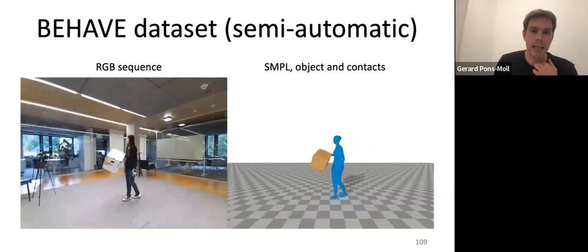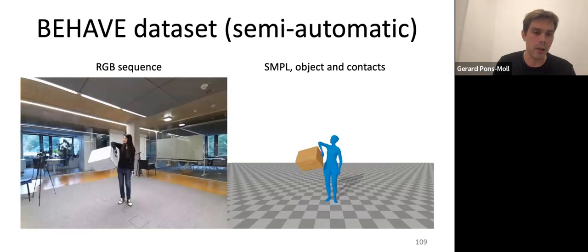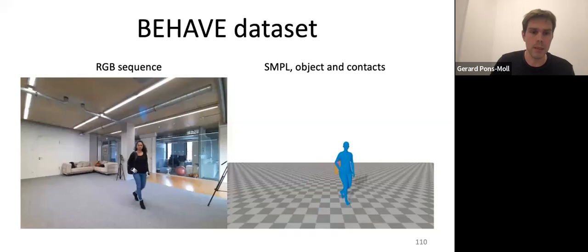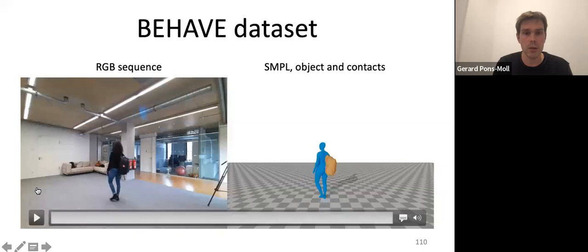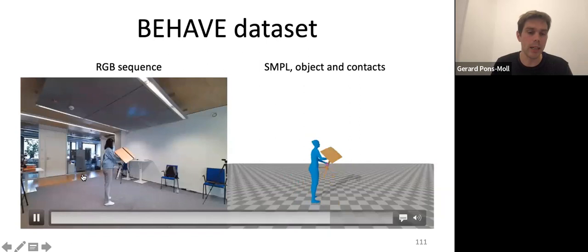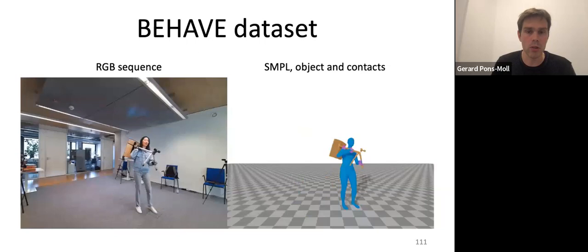We have a dataset of human-object interactions, captured with three Kinects and a new method to obtain high-quality results, capturing human motion and the object while reasoning about the context between human and object and the interactions between them. We're looking more and more at the interaction of humans and objects. This relates very much to the first part of the talk — we're also using neural implicits to reconstruct the object and find correspondences between the object and the human.